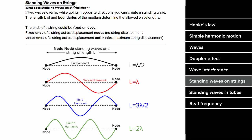How do you deal with standing waves on strings? To get a standing wave, you need waves overlapping going in opposite directions, but only certain allowed wavelengths will create a standing wave. What determines the allowed wavelengths is the length of the medium and its boundary conditions — the ends of a string can be fixed or loose. If the end is fixed, it's a displacement node — a point with no displacement. If the end is loose, it acts as a displacement antinode — a point with maximum displacement.